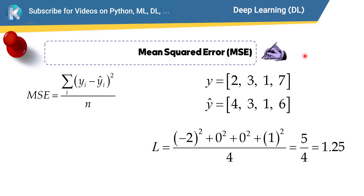Now let's talk about common loss functions in TensorFlow and Keras. The first one is mean squared error, or MSE. Suppose that for a regression problem, these are the actual values and these are the predicted values.